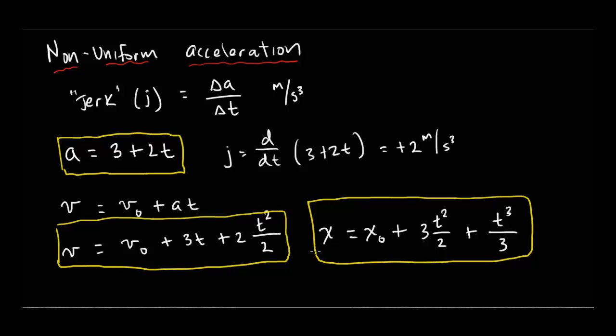I haven't told you, we don't know what x naught is, right? And we don't know what v naught is either. I haven't given you enough information to figure out what those are. But what we've figured out is expressions that will allow us from this value of acceleration to figure out the velocity at any time t and the position at any time t.